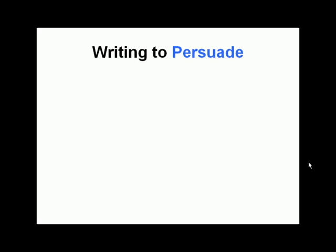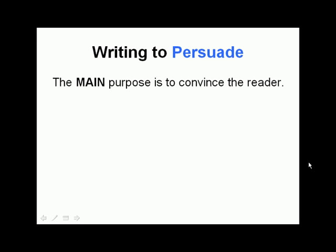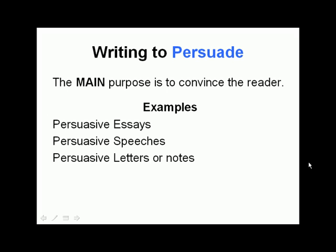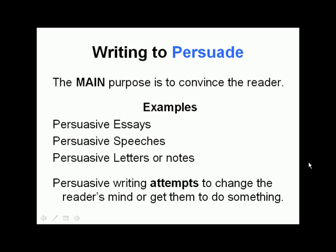Writing to persuade: the main purpose is to convince the reader to do something or to reaffirm their existing beliefs. Some examples would be persuasive essays, persuasive speeches, persuasive letters or notes — such as a note that a child might leave to their parent asking for a puppy — or even an advertisement. With persuasive writing, the writer is attempting to change the reader's mind or get them to do something.